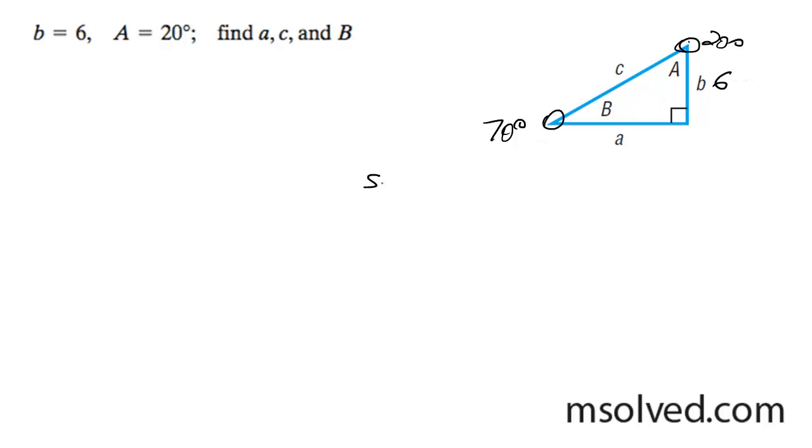So I'm going to use trig to find side C first. It's going to be equal to 6 over C. And finally, to get C, we're going to do C is equal to 6 divided by the sine of 70, which gives us 6.39.